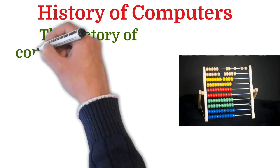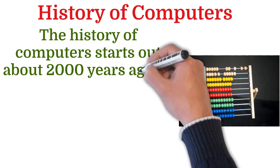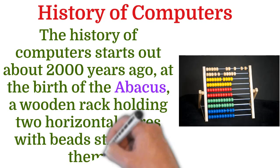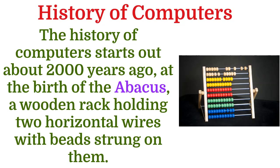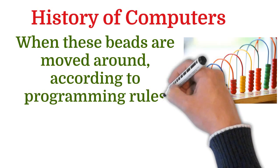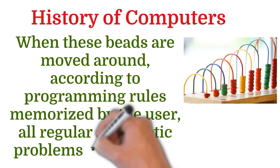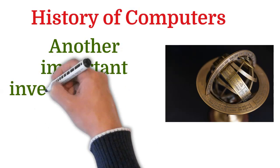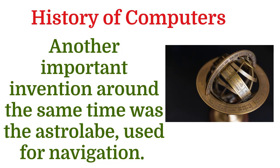Next is the history of computers. The history of computers starts out about 2000 years ago at the birth of the Abacus — a wooden rack holding two horizontal wires with beads strung on them. When these beads are moved around according to programming rules memorized by the user, all regular arithmetic problems can be done. Another important invention around the same time was the astrolabe, used for navigation.